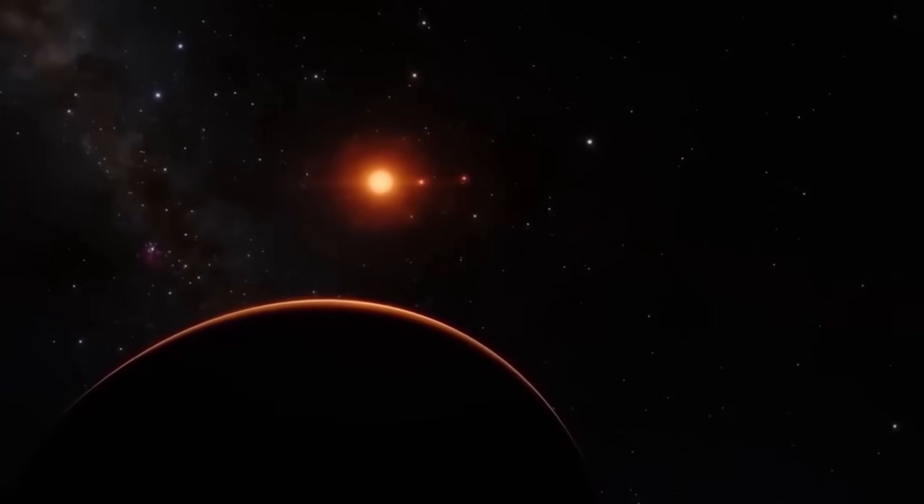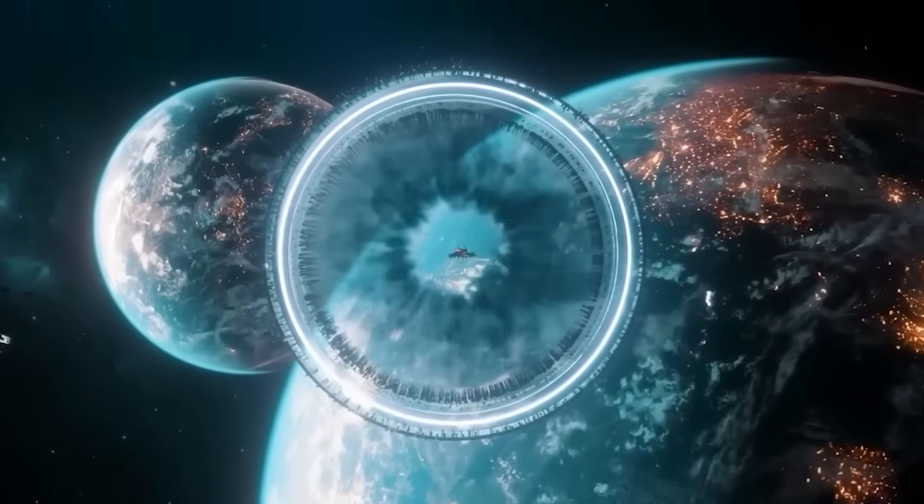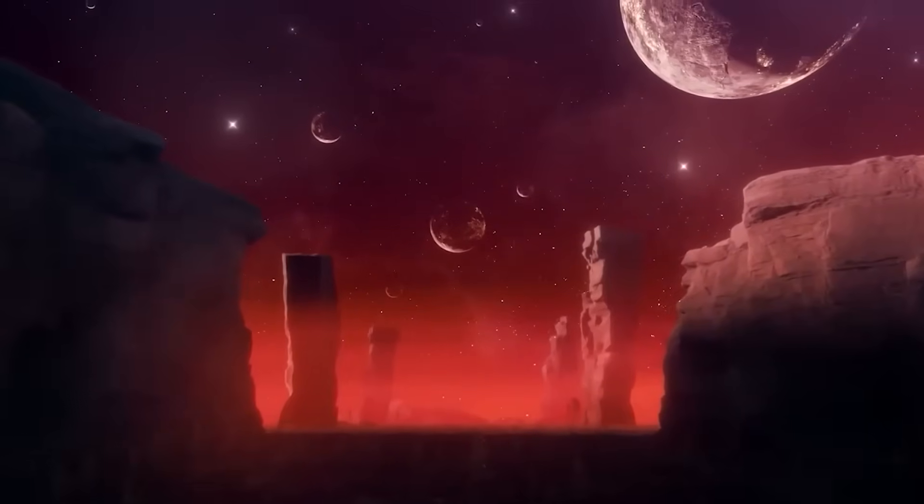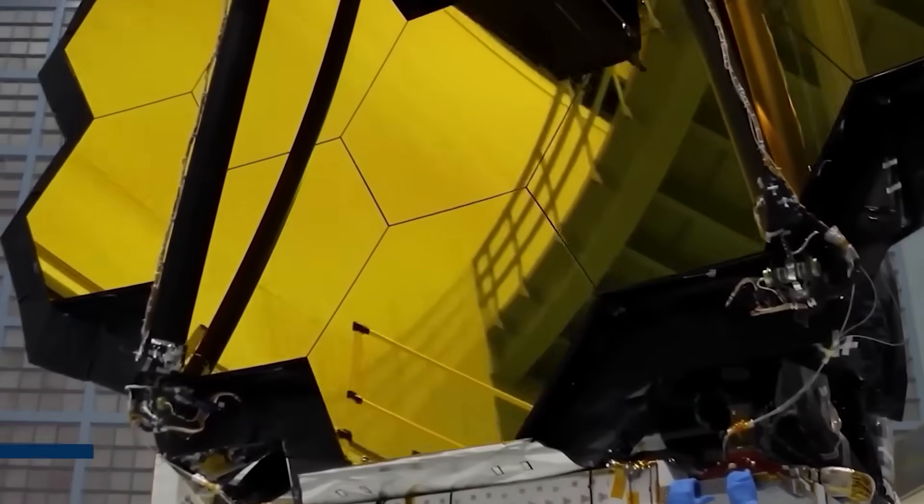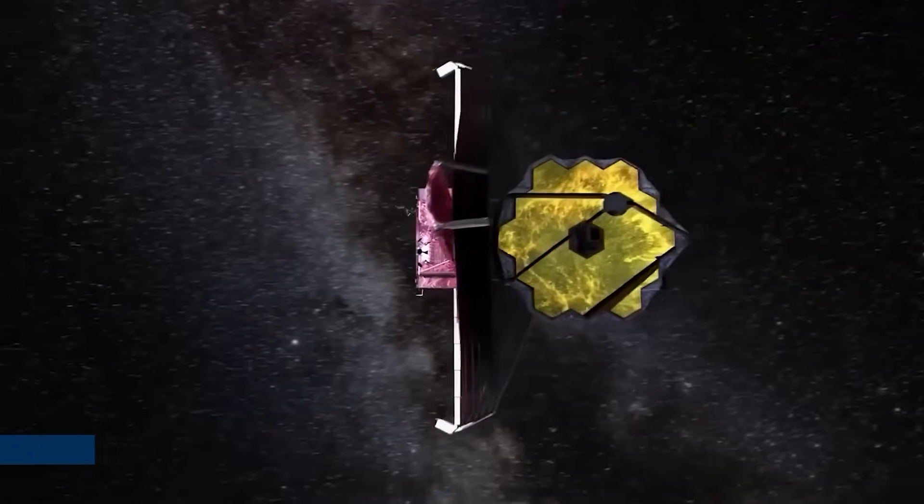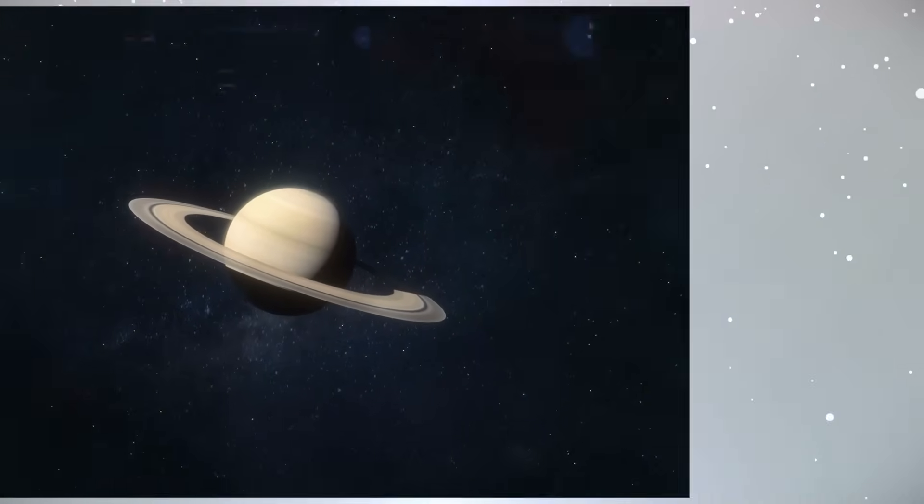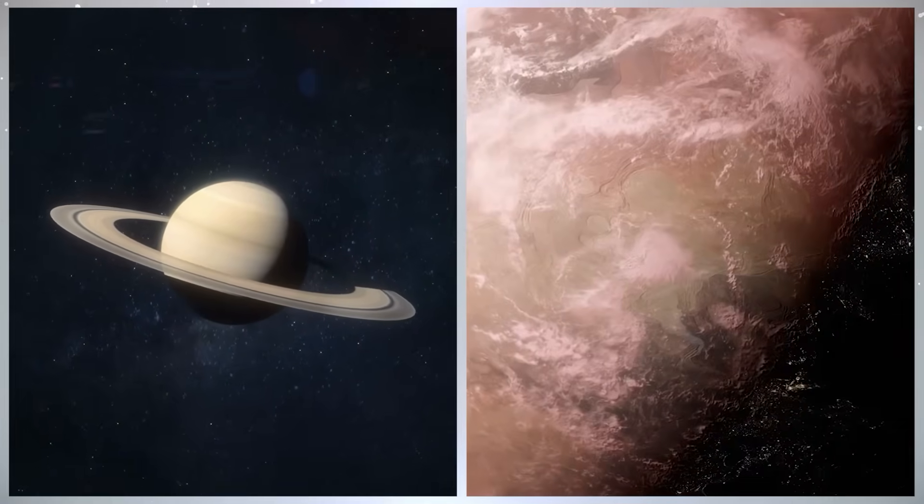This isn't a blurry shadow or a dip in light like we've seen before. This is a real planet, far from Earth, seen clearly through Webb's powerful eyes. It's called TWA-7b, and it's sitting in a ring of space dust, glowing gently in the dark. Scientists say it's about the size of Saturn and is still cooling off from the time it was born.